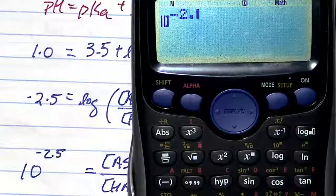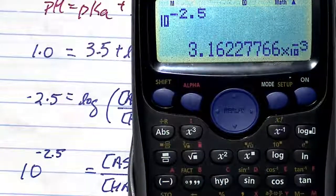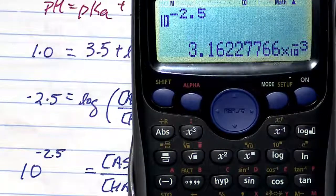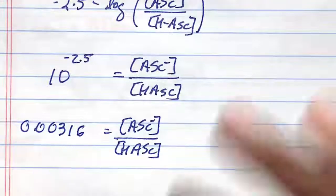We're getting 3.16 times 10 to the minus 3. So that species dominates at pH 1.